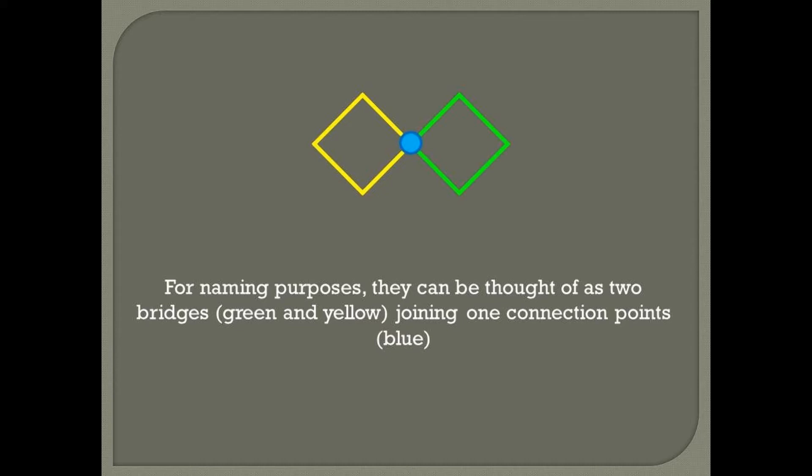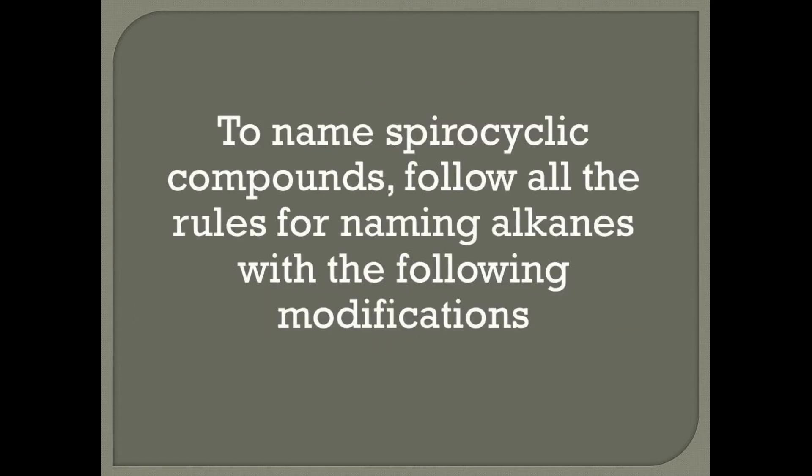For naming purposes, spirocyclic alkanes can be thought of as having two bridges joining one connection point. The two bridges in this slide are the yellow and the green, and the connecting point is the blue dot in the middle. To name spirocyclic alkanes, follow all the rules for naming alkanes with the following modifications.